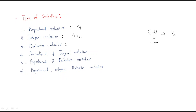The derivative controller is represented as kd times s, where kd is the derivative gain. In the time domain it is d/dt, and when converted to the s-domain it becomes s times something. Next is the proportional-integral controller, which is the combination of both: kp plus ki/s.